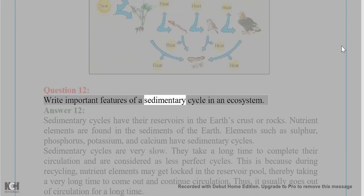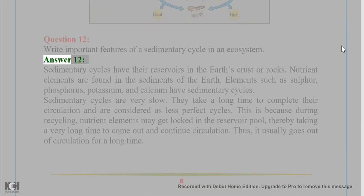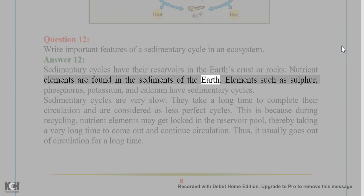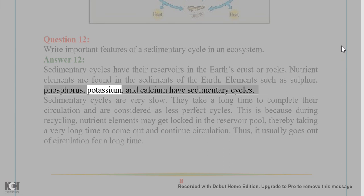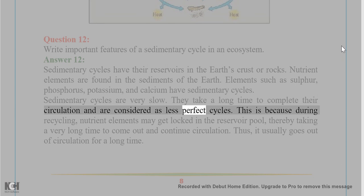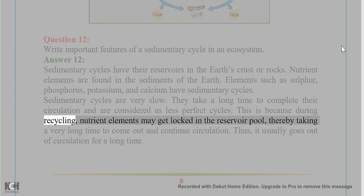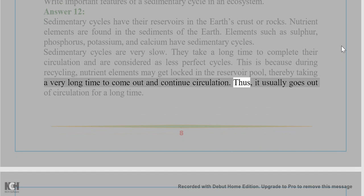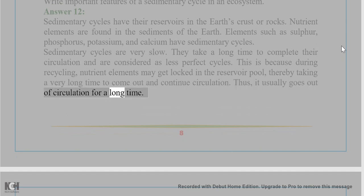Question 12: Write important features of a sedimentary cycle in an ecosystem. Answer 12: Sedimentary cycles have their reservoirs in the earth's crust or rocks. Nutrient elements are found in the sediments of the earth. Elements such as sulfur, phosphorus, potassium, and calcium have sedimentary cycles. Sedimentary cycles are very slow and take a long time to complete their circulation; they are considered less perfect cycles because nutrient elements may get locked in the reservoir pool, going out of circulation for a long time.